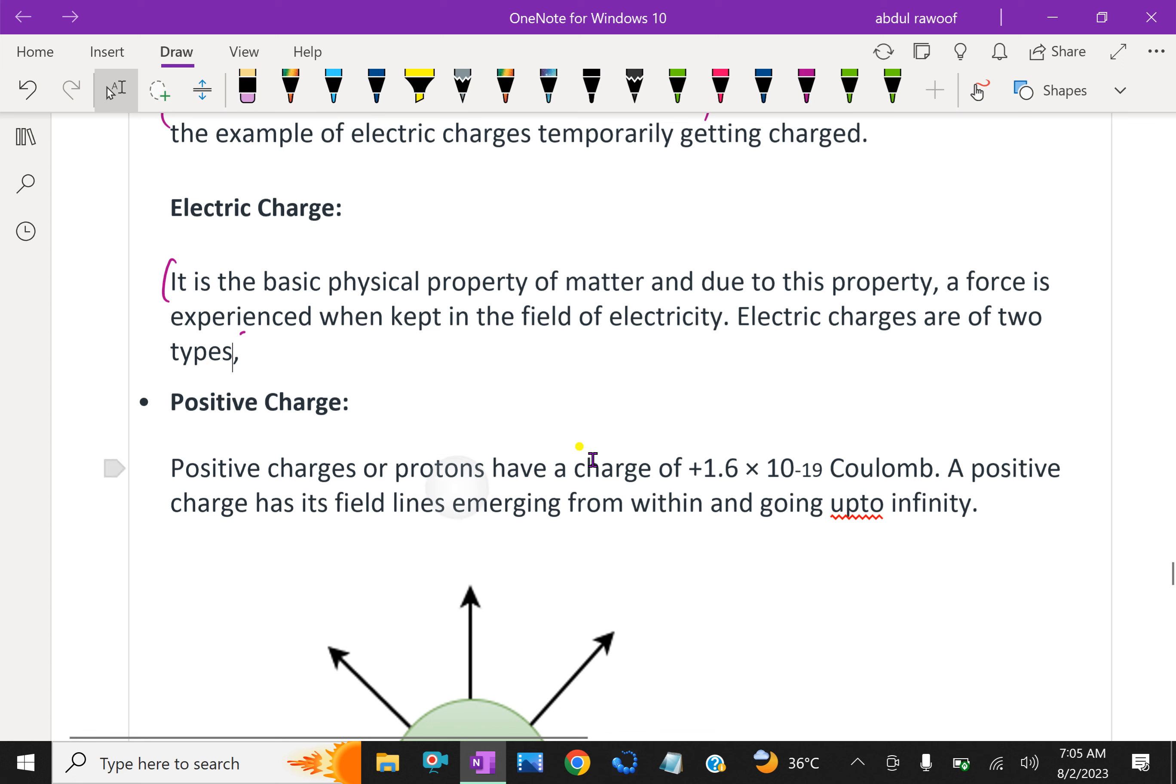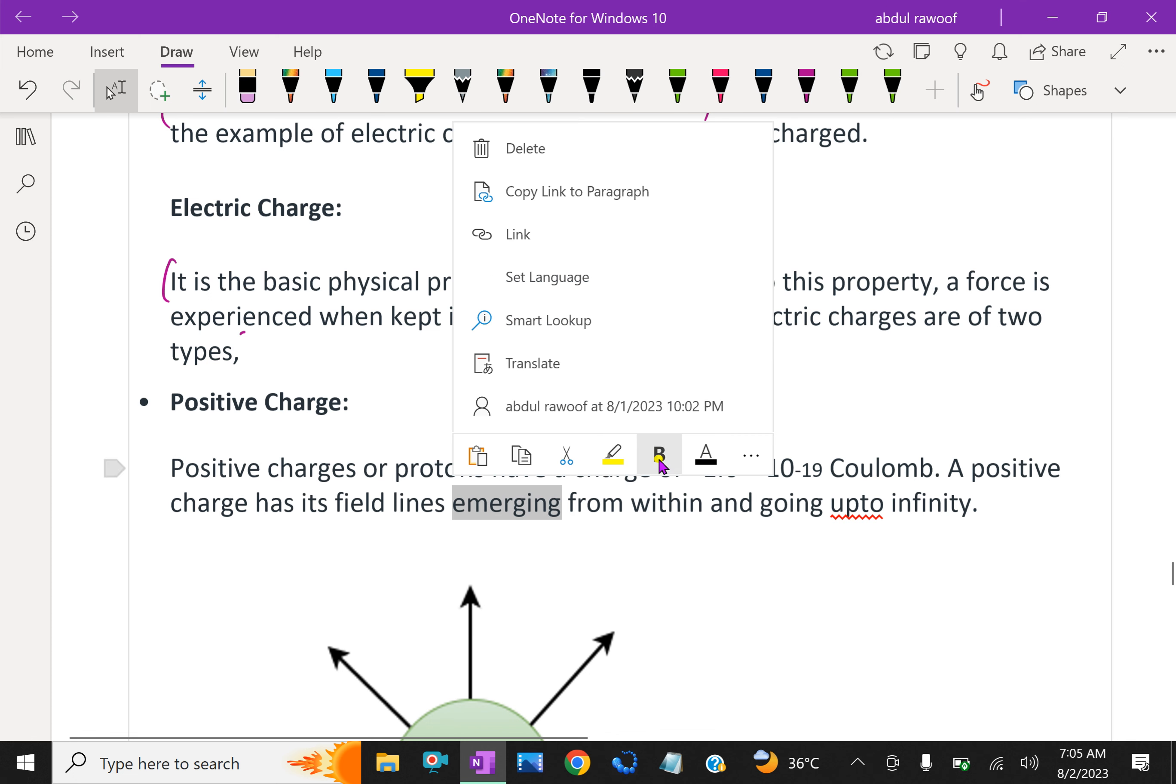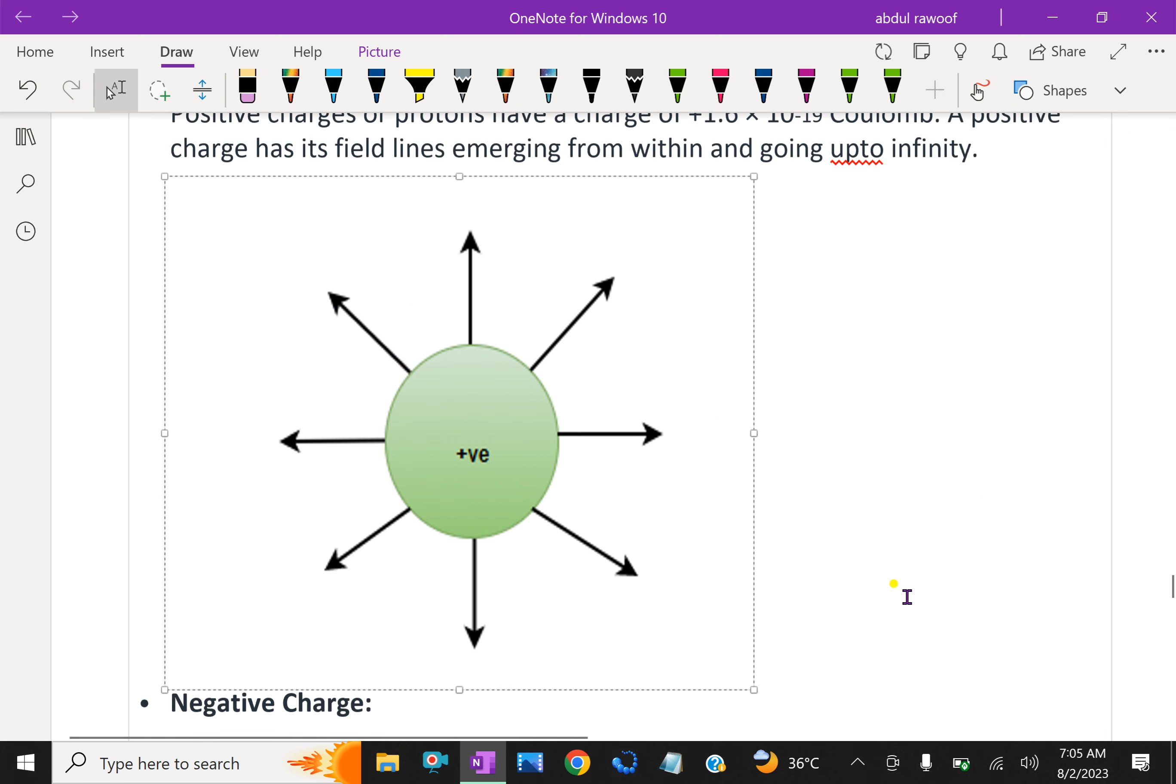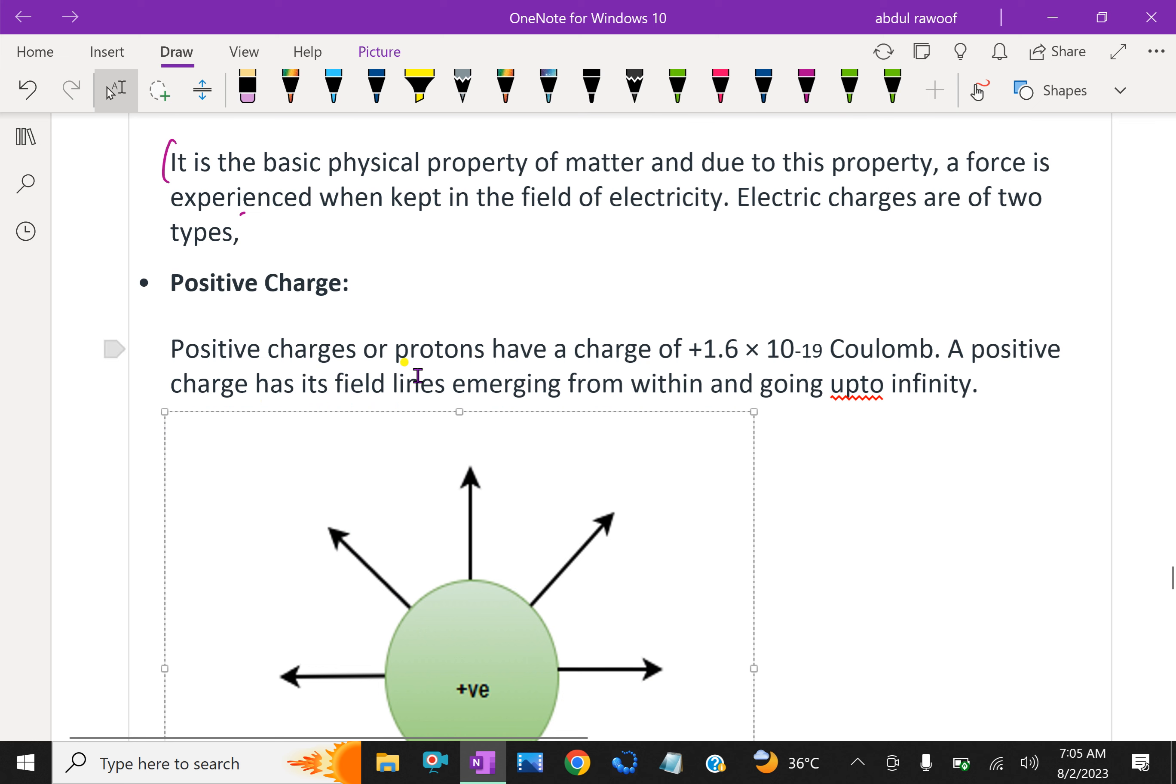What is positive charge? A positive charge or protons have a charge of +1.6 × 10^-19 coulomb. A positive charge has its field lines emerging from within and going up to infinity.